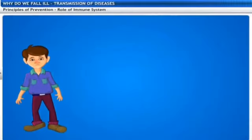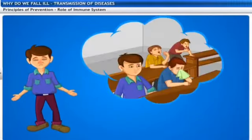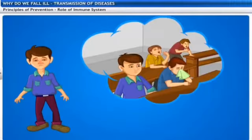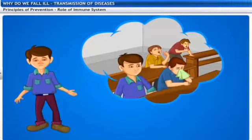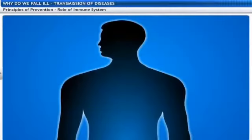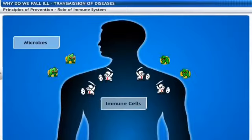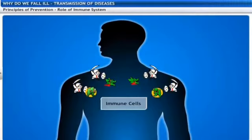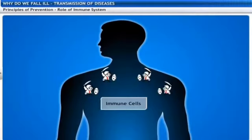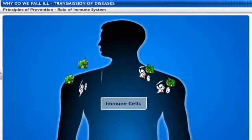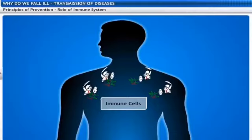The immune system has a huge impact on the life of an individual. We can observe that in a particular season some people are affected by disease while others are not, because the immune system of some individuals is far stronger. A good balanced diet is one of the major things a person should have. There are certain immune cells in the body that kill and destroy foreign substances, fighting off microbes.